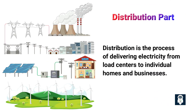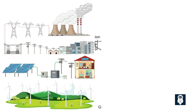Distribution is the process of delivering electricity from load centers to individual homes and businesses. Distribution lines are lower-voltage power lines that branch off from transmission lines and bring electricity to the end-user.